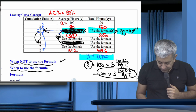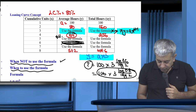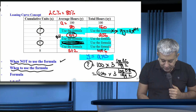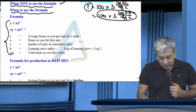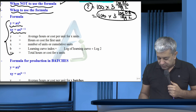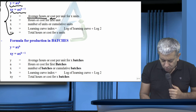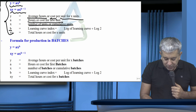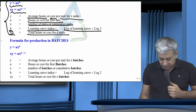Summary of formulas: Y = AX^b gives average hours/cost per unit for X units. XY = AX^(b+1) gives total hours/cost for X units. A = hours or cost for the first unit. X = cumulative number of units. B = log(learning curve percentage) ÷ log 2 (the learning curve index). XY = total hours or cost for X units. Use Y formula when you need average hours; use XY formula when you need total hours.